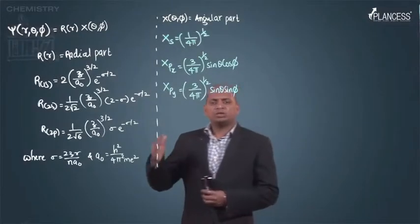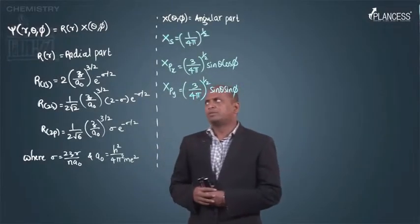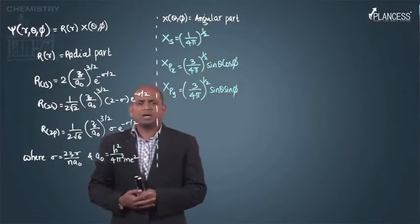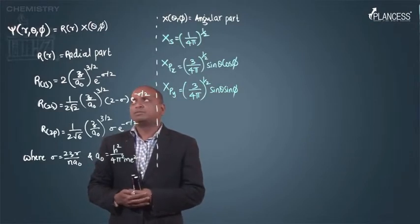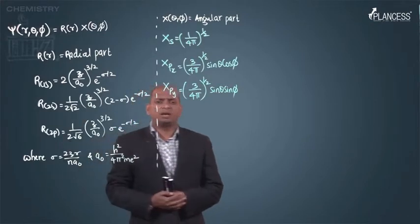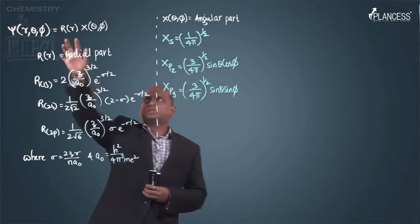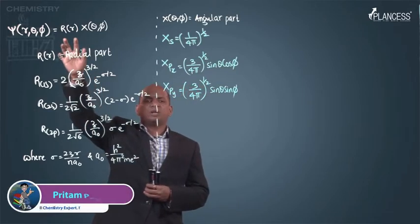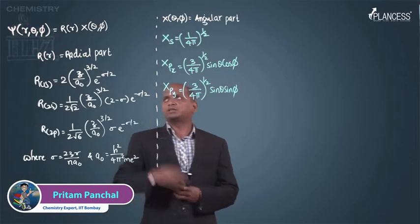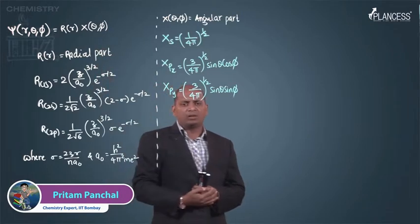In continuation with the Schrödinger equation, psi is a wave function which is of r, theta and phi, which actually involves two functions. One is r, radial function, and this is for the angular function.